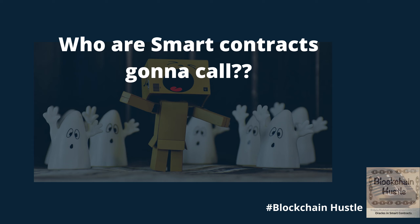Together, Chainlink and Town Crier allow smart contracts to interact with real-world events with a great degree of trust. To summarize: smart contracts are contingent on real-time external events; involved parties need to trust the external data source; oracles need to be reliable, complete, authentic, and secure. The oracle problem is being addressed by entities like Chainlink and Town Crier, which is important as most anticipated real-life use cases depend on solving this problem. Thank you for listening and see you in the next one.